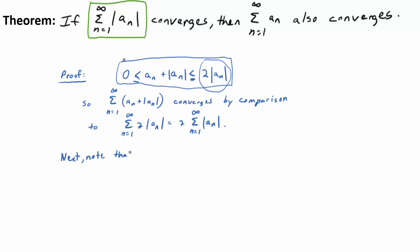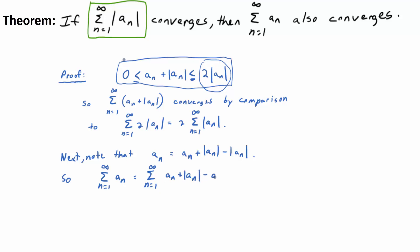Now here's a fancy addition-subtraction trick. What I'm trying to show is that the sum of aₙ converges. Note that aₙ = (aₙ + |aₙ|) − |aₙ| — that's trivially true. So putting a summation in front of both sides, the sum of aₙ equals the sum of (aₙ + |aₙ|) minus the sum of |aₙ|.